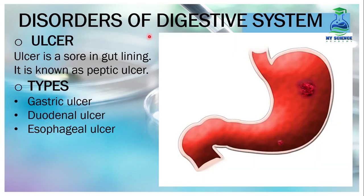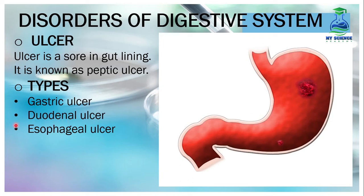Now we will discuss the third disorder of the digestive system — ulcer. Ulcer is a sore in the gut lining, also known as peptic ulcer. If there is a wound or sore in the lining of the digestive tract, that is called an ulcer. There are 3 types: Number 1, gastric ulcer — ulcer in the stomach. Number 2, duodenal ulcer — ulcer in the duodenum of the small intestine. Number 3, esophageal ulcer — ulcer in the esophagus.